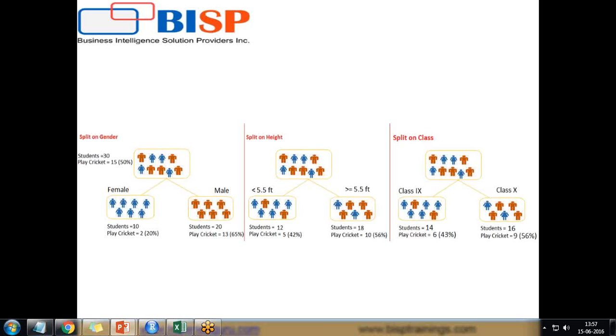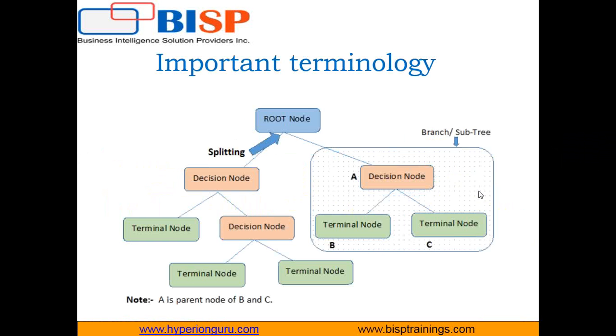Let's understand the important terminology in decision tree. The first node is called the root node, which represents the entire population or sample and gets further divided into two or more homogeneous sets. Splitting is the process of dividing a node into sub-nodes. Once a root node gets divided, we call them decision nodes, which further get divided into terminal nodes or more decision nodes. The terminal node or leaf node does not split.